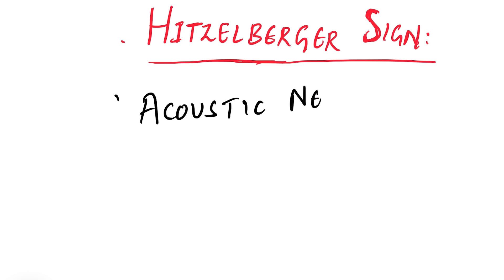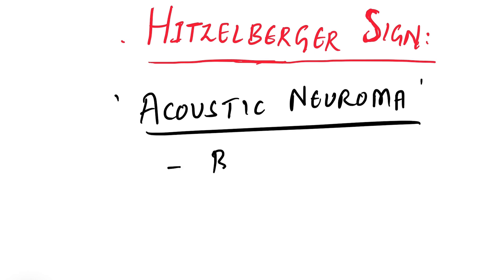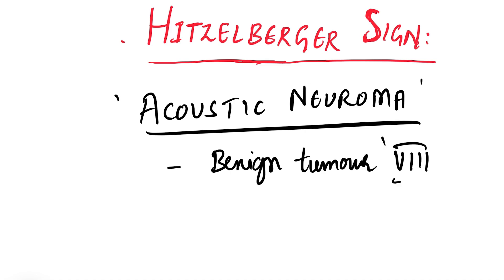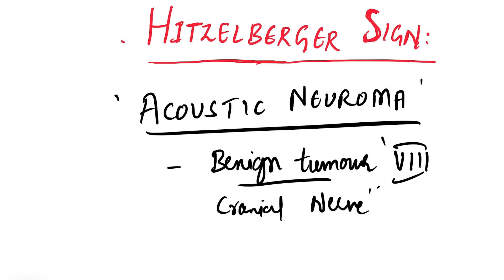Now what is this acoustic neuroma? Acoustic neuroma is a benign tumor of the eighth cranial nerve, that is the vestibulocochlear nerve. So it is a benign tumor of the eighth cranial nerve, and in this clinical condition you will see this Hitzelberger sign.